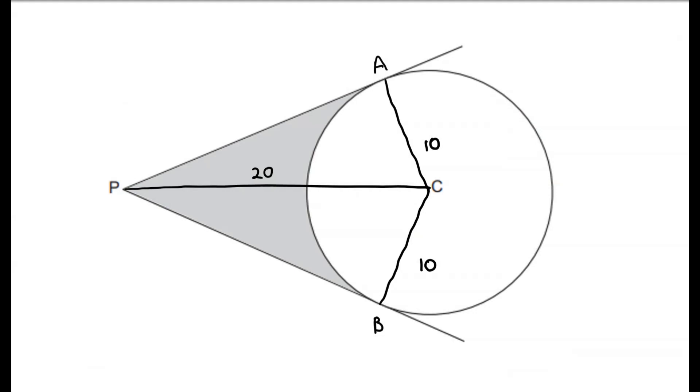So now we can use some of our circle theorems. We know that the angle between the tangent and the radius of the circle is 90 degrees. So we're labelling angles PBC and angles PAC as right angles.